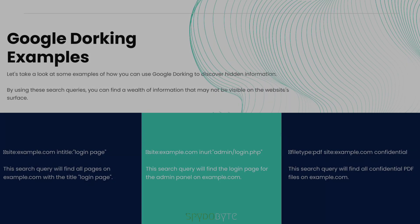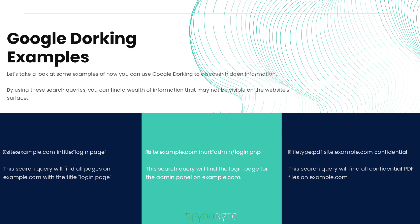Google Dorking examples. Let's take a look at some examples of how you can use Google Dorking to discover hidden information. 'site:example.com intitle:Login Page' — this search query will find all pages on example.com with the title Login Page. 'site:example.com inurl:admin login filetype:php' — this search query will find the login page for the admin panel on example.com. 'filetype:pdf site:example.com confidential' — this search query will find all confidential PDF files on example.com.